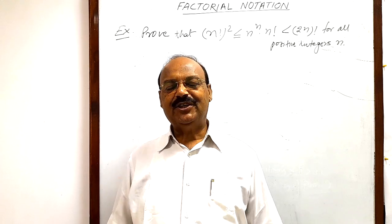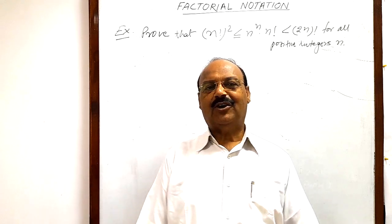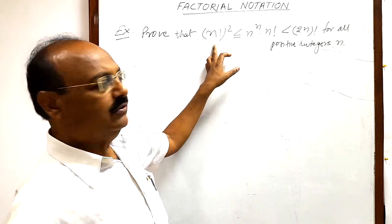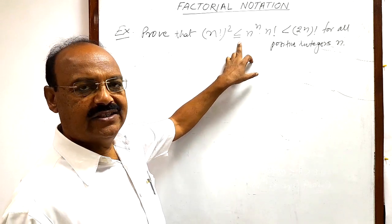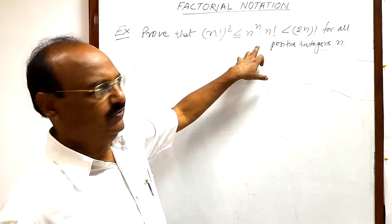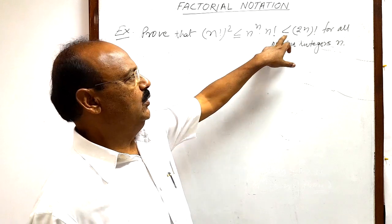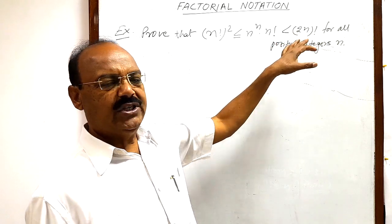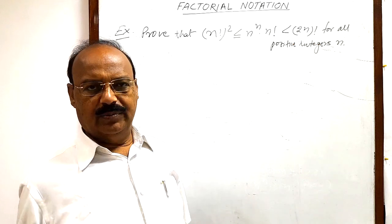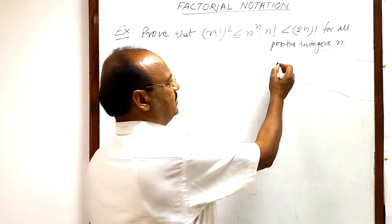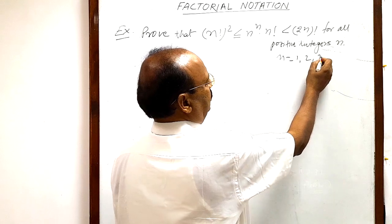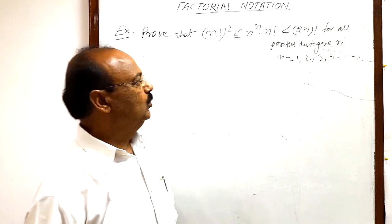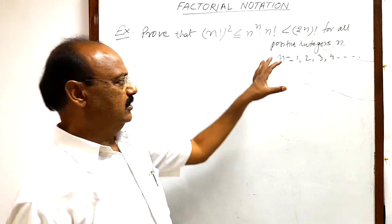Today let us see a very interesting question from the topic of factorial notation. The question is: prove that (n!)² ≤ nⁿ · n! < (2n)! for all positive integers n. Positive integers means natural numbers starting from 1, that is n = 1, 2, 3, 4 and so on. So let us start the solution.